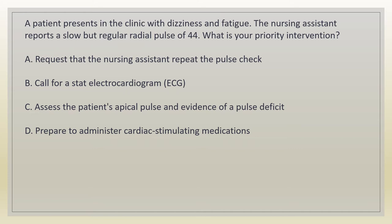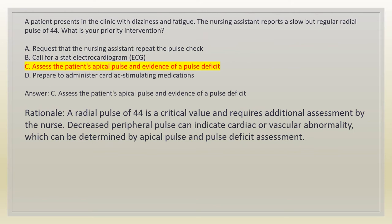A patient presents in the clinic with dizziness and fatigue. The nursing assistant reports a slow but regular radial pulse of 44. What is your priority intervention? A. Request that the nursing assistant repeat the pulse check. B. Call for a stat electrocardiogram (ECG). C. Assess the patient's apical pulse and evidence of a pulse deficit. D. Prepare to administer cardiac stimulating medications. Answer: C. Assess the patient's apical pulse and evidence of a pulse deficit. Rationale: a radial pulse of 44 is a critical value requiring additional assessment. Decreased peripheral pulse can indicate cardiac or vascular abnormality, which can be determined by apical pulse and pulse deficit assessment.